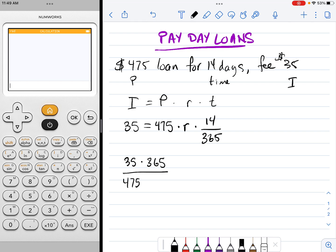I can type that into the calculator now. On some calculators you might need to add parentheses around the denominator just to make sure that you're dividing by both the 475 and 14. If I do 35 times 365 divided by 475 times 14, I get my rate is 1.921.